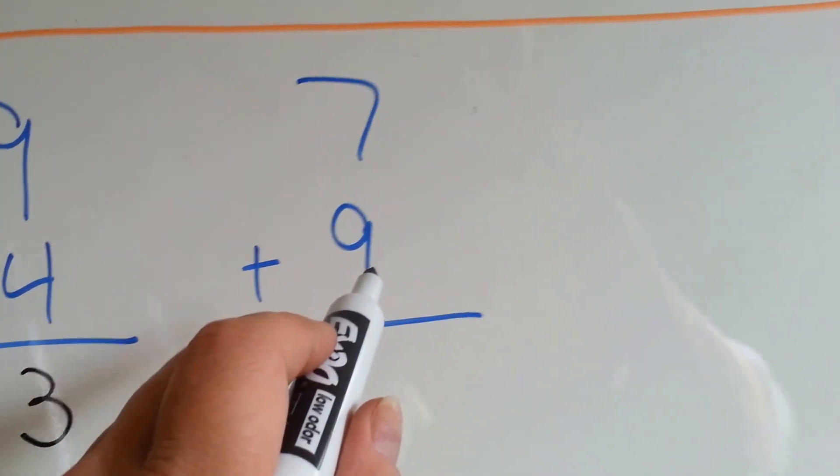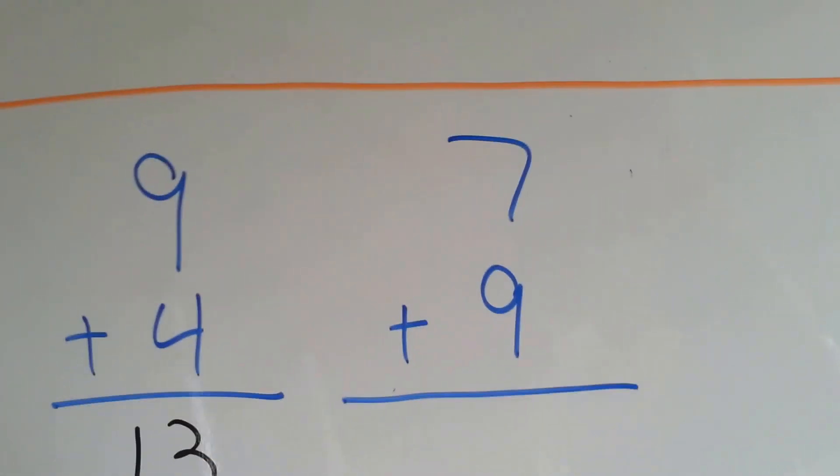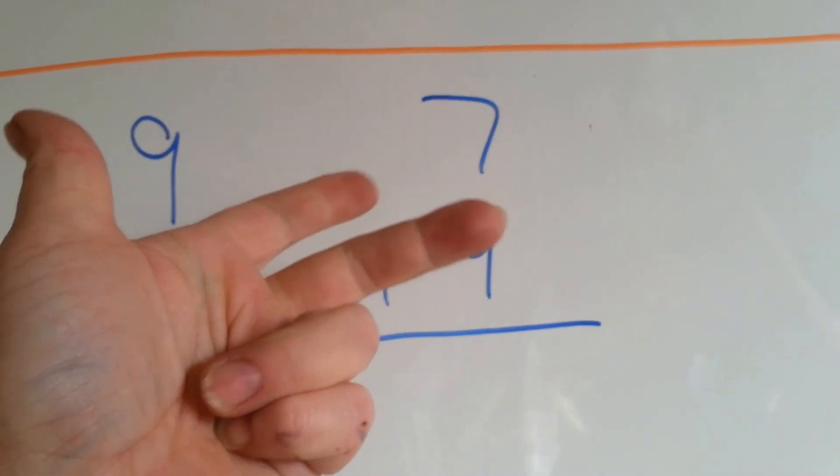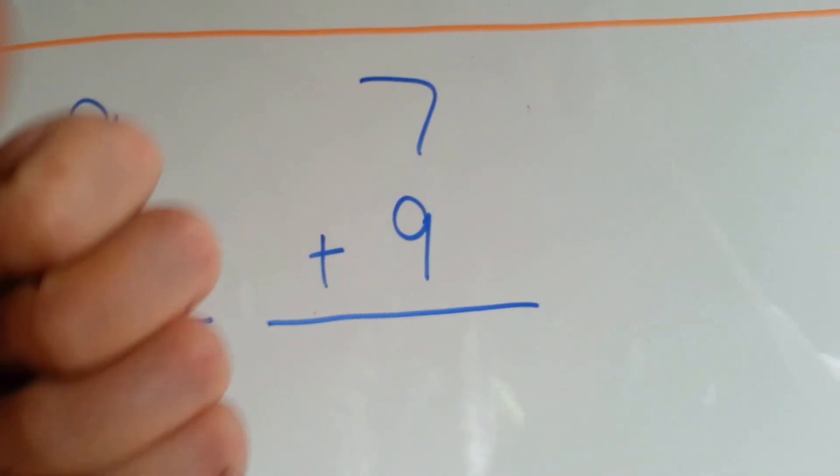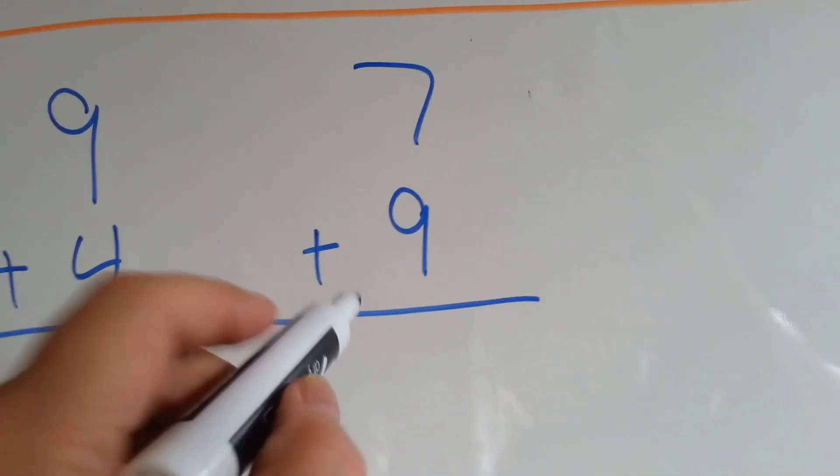7 plus 9. Start with the bigger number, 9. 10, 11, 12, 13, 14, 15, 16. 7 plus 9 is 16.